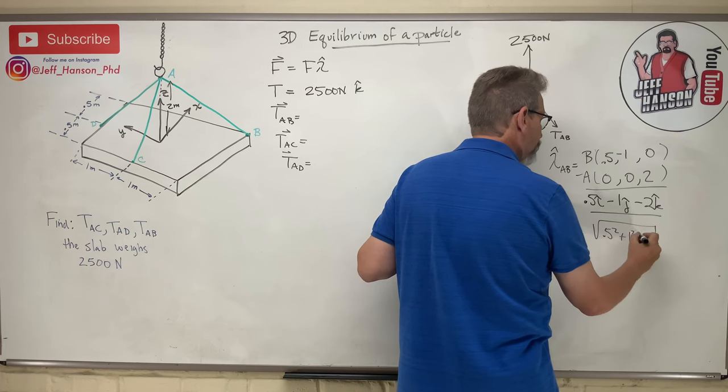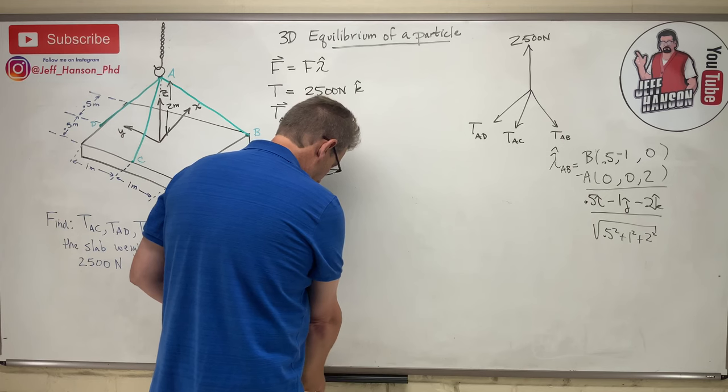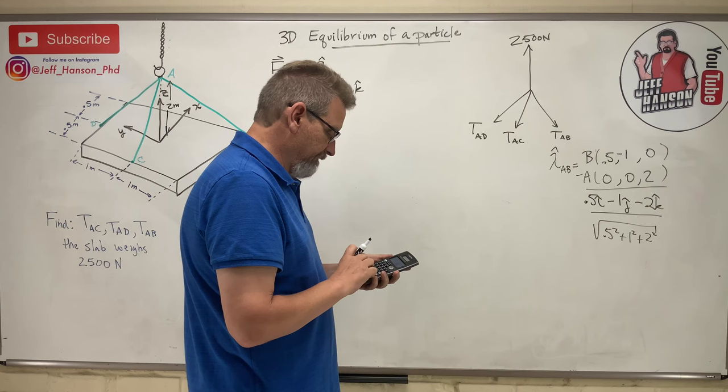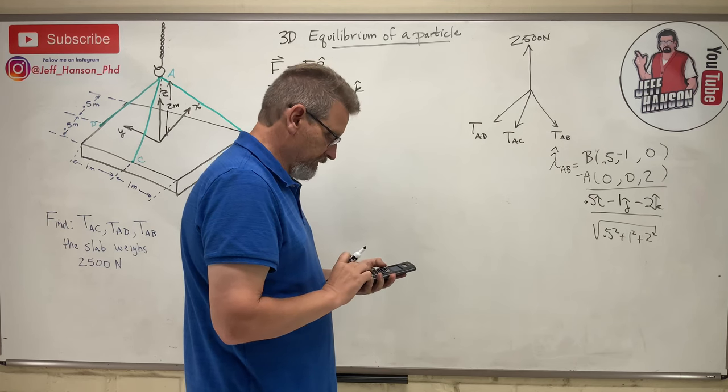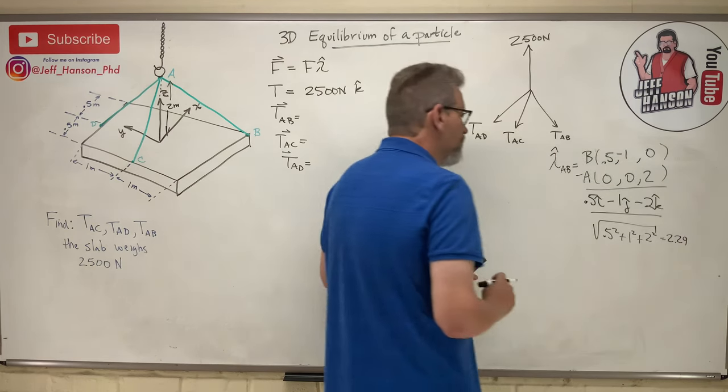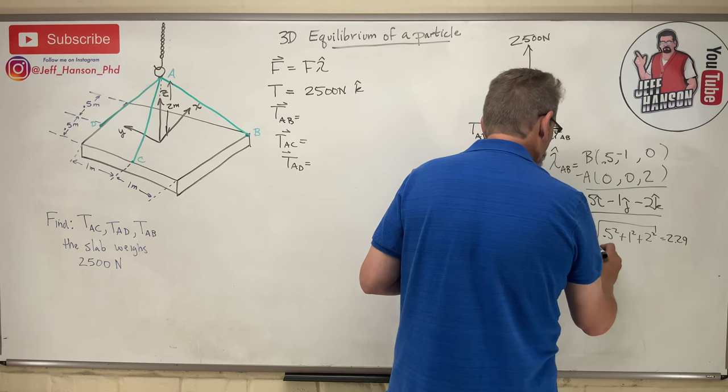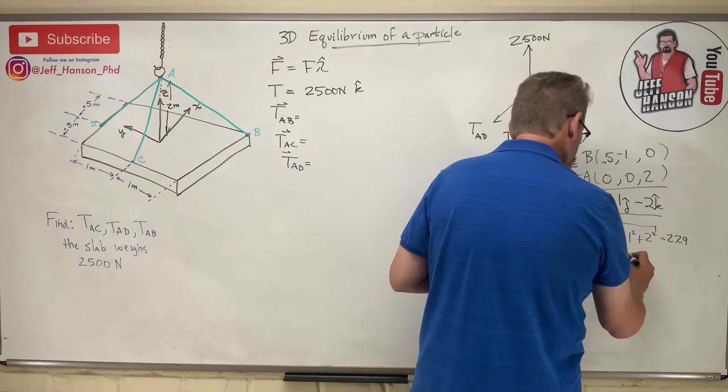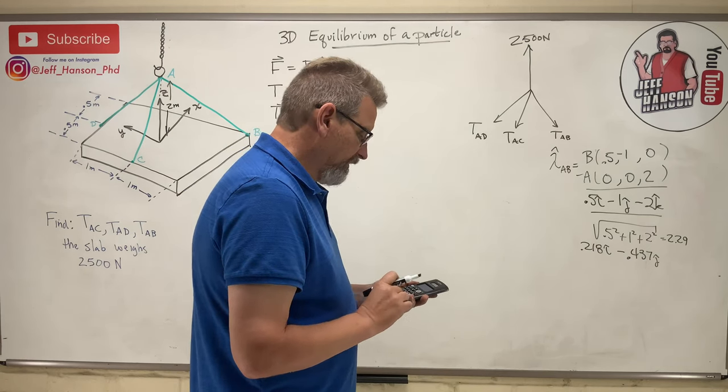So what are the coordinates of point B over here on this corner? In the X I have to go 0.5, zero in the Z because it's down on the plate, and then how much in the Y? It's negative one. So here we go: 0.5 minus zero is 0.5, and then minus one minus zero is still minus one, and then zero minus two is minus two, divided by the magnitude, 0.5 squared plus one squared plus two squared.